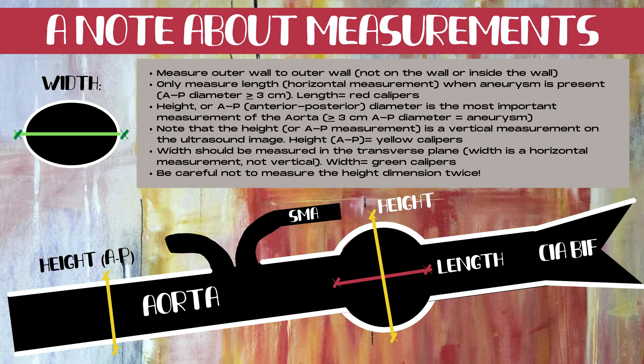When moving into a transverse plane of the aorta, the width should be measured. Note that width is a horizontal measurement, not a vertical measurement. Width is demonstrated by the green calipers on this image. One of the most common mistakes made is that the height or AP dimension is measured twice, meaning that you end up with two vertical measurements and no horizontal measurements.